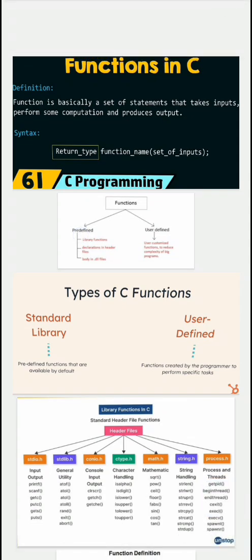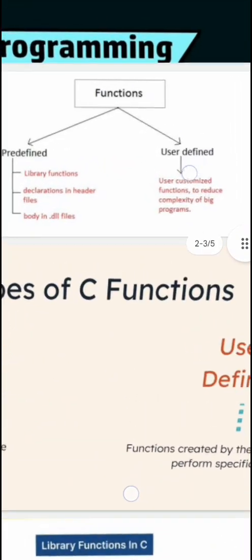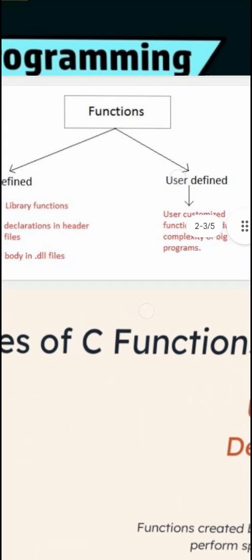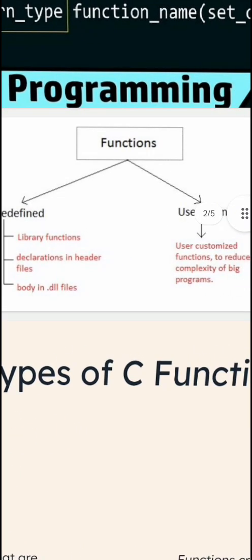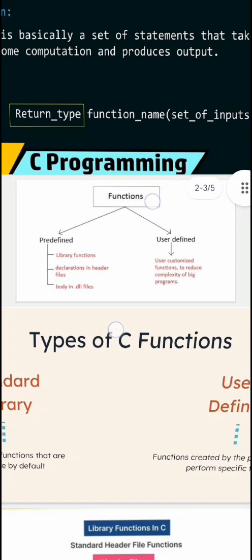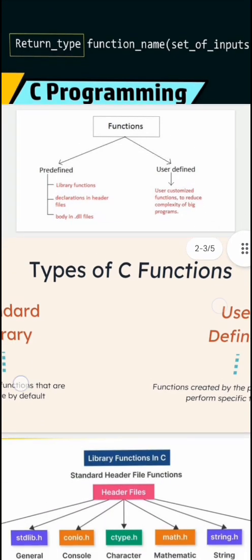There are two types of functions: first, predefined functions, and second, user-defined functions. Predefined functions are also known as library functions. User-defined functions reduce the complexity of a big program.